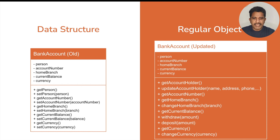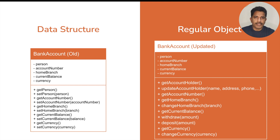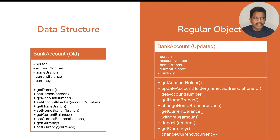Let's take another example — a bank account. As a data structure model class, you have person, account number, home branch, current balance, currency, and all the getter and setter methods. But if you are using it as a business object, you have the same private variables, but the method names clearly describe what they do without revealing internal variable names. For example, 'get account holder' returns a person object, and 'update account holder' lets you update account details — no one knows that we are storing that as a person internally or what structure we are using.